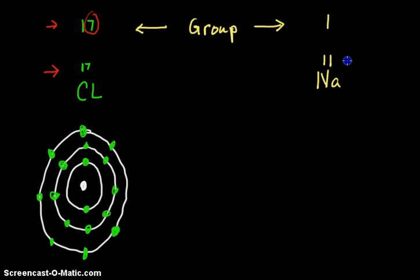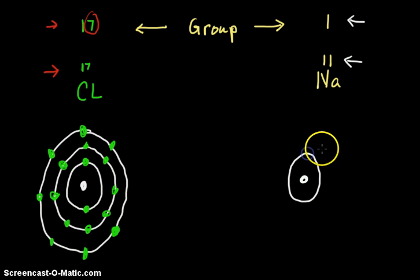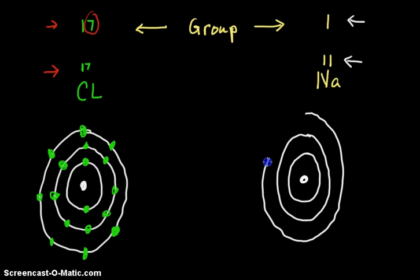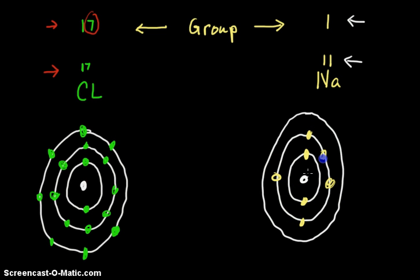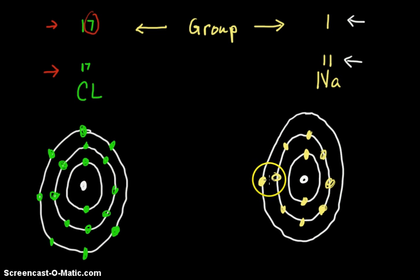Sodium has an atomic number of 11 and is in group 1, so it will have one electron in its outer shell. Drawing the structure: shell one, shell two, and a third shell. Sodium has two in the first, eight in the second, and one in the third — that's all eleven electrons. So sodium has one extra electron and chlorine is short one.